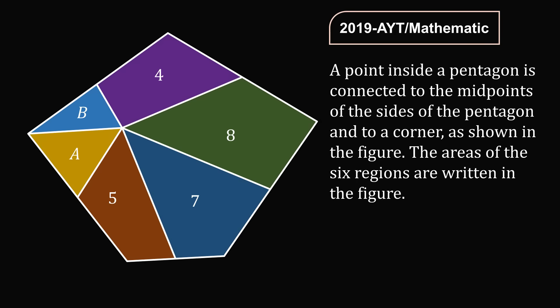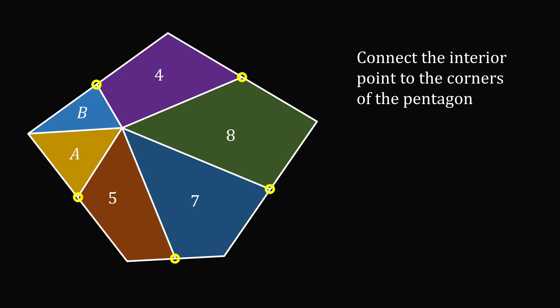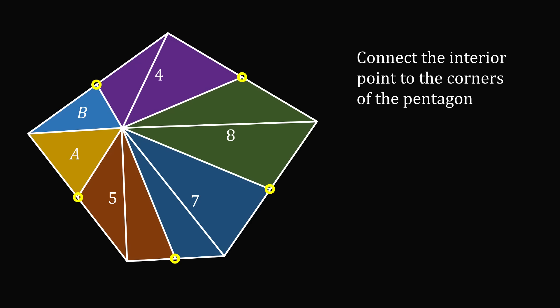A point inside a pentagon is connected to the midpoints of the sides of the pentagon and to a corner, as shown in the figure. The areas of the six regions are shown in the figure, and you need to determine the value of A minus B. This problem can be solved in a very similar fashion. Let's mark the five midpoints of the five sides — we know each side is bisected at the midpoint. Just like the viral problem, we will connect the interior point to the corners of the pentagon, dividing it into 10 triangles.